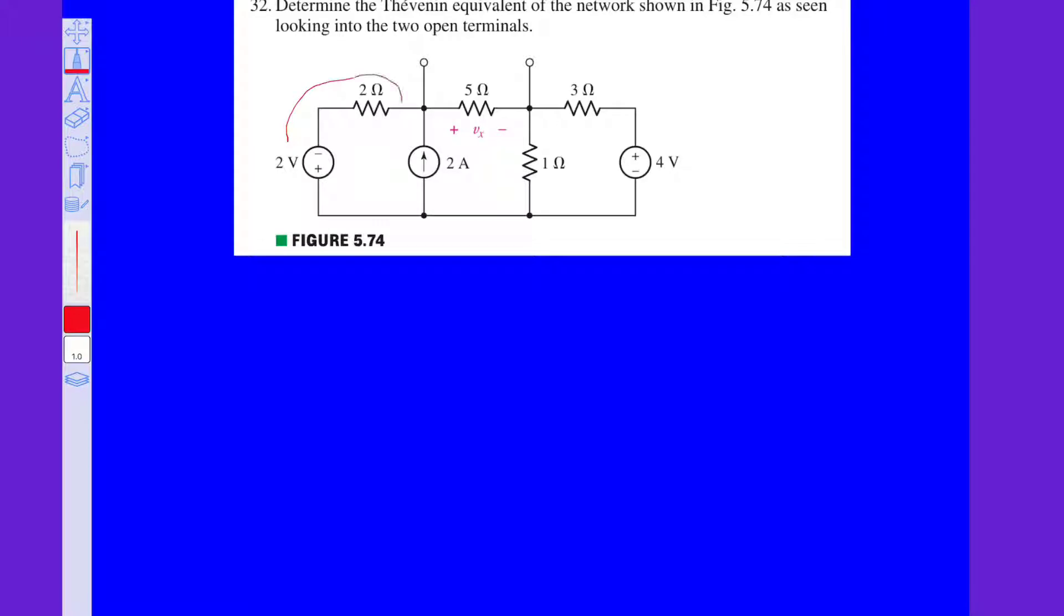This voltage source in series with 2 ohms resistance. Let us apply the source transformation here. By applying source transformation to a voltage source, it will transform to a current source in parallel with a resistance. Resistance is same as 2 ohms, but the current source is nothing but V by R. V is 2 volts and resistance R is 2 ohms, this is 1 amp.